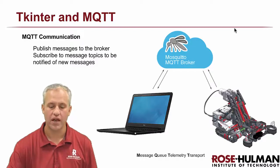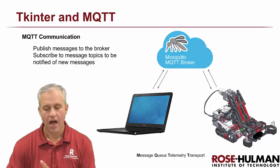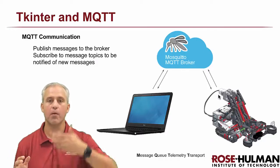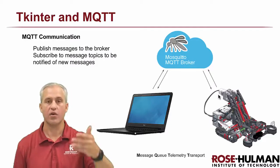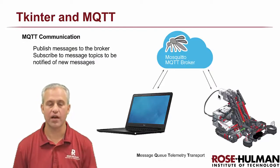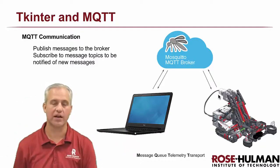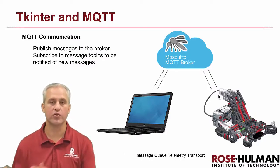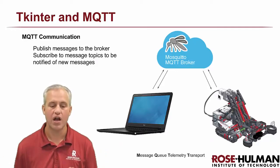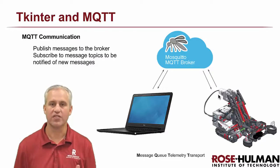The way MQTT works is that your computer communicates with a server called the broker. The EV3 also talks to that same broker. Both have the ability to publish messages to that server and subscribe to receive messages from it. You set up what's called a topic, and you publish or subscribe to a topic — that's how you transfer messages back and forth. It doesn't have to be computer to EV3; it can be any computer talking to the server. MQTT stands for Message Queue Telemetry Transport.